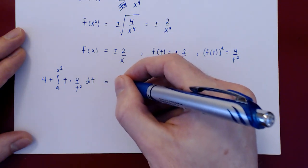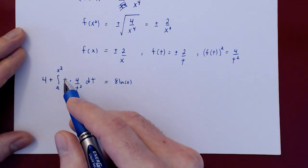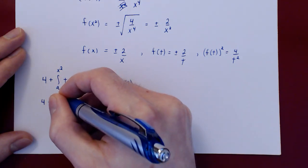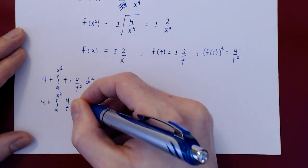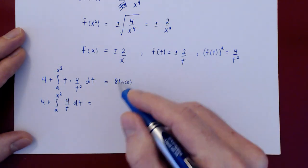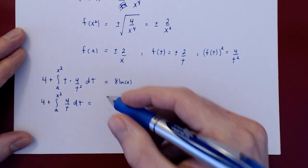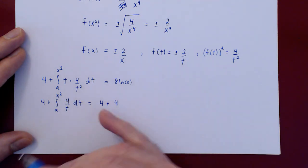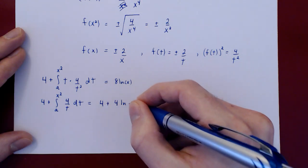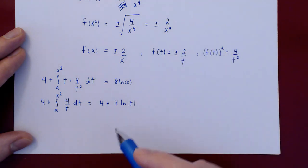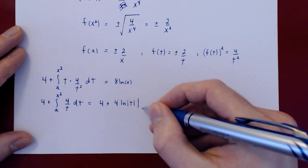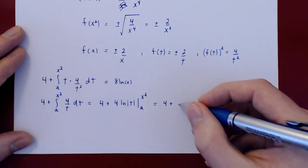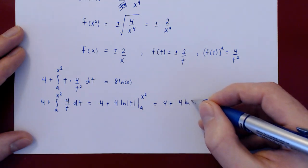This is equal to 8 ln of x. We can simplify here — this is simply 4 over t. Before we equate this to 8 ln of x, let's perform the integration using the fundamental theorem of calculus. The function whose derivative is 1 over t is, of course, ln of t in absolute value. So we have the antiderivative. By the fundamental theorem of calculus, we evaluate the antiderivative from a to x squared. We will get 4 plus the antiderivative at x squared — ln of x squared in absolute value.